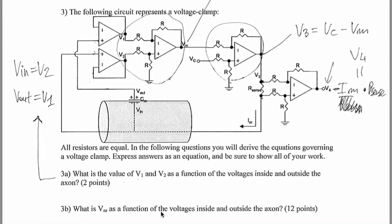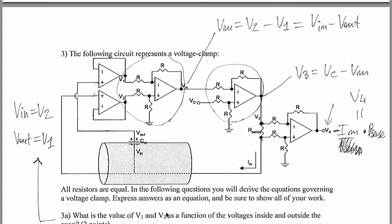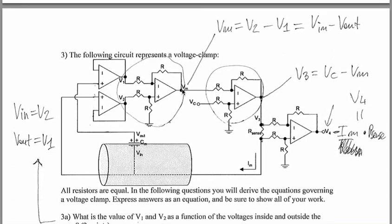What is Vm as a function of the voltage inside and outside the axon? Let's go and see Vm. Vm is this point here. It's basically the voltage V2 that goes into the plus minus the voltage V1 that goes into the minus, because these four resistors are equal, so this circuit only does the difference of the two. So, Vm is V2 minus V1, which is Vin minus Vout.